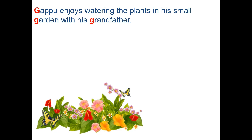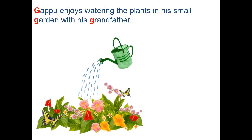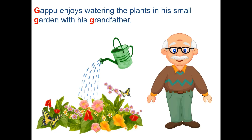Gappu enjoys watering the plants in his small garden with his grandfather. Children, grandfather can be both Dadaji and Nana.